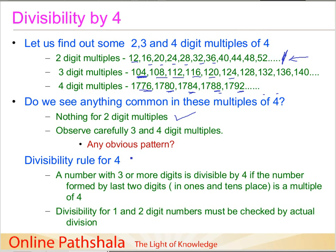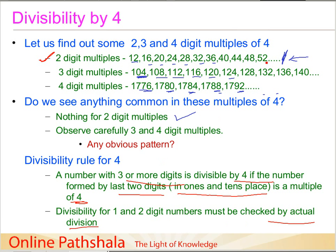This brings us to the divisibility rule for 4: a number with three or more digits is divisible by 4 if the number formed by the last two digits — that is, the digits in the ones and tens place — is a multiple of 4. For one- and two-digit numbers, we simply perform actual division; if the remainder is zero, then the number is divisible by 4.